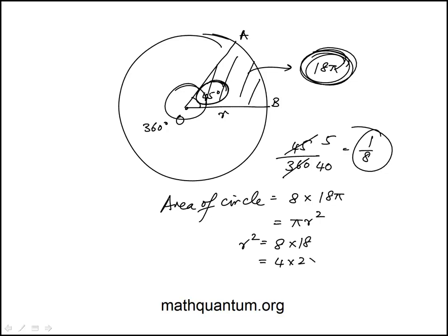And this can be written as 4 times 2 times 18. That's 36. The reason I'm doing that is because I need to take a square root. Square root of 4 is 2. Square root of 36 is 6.